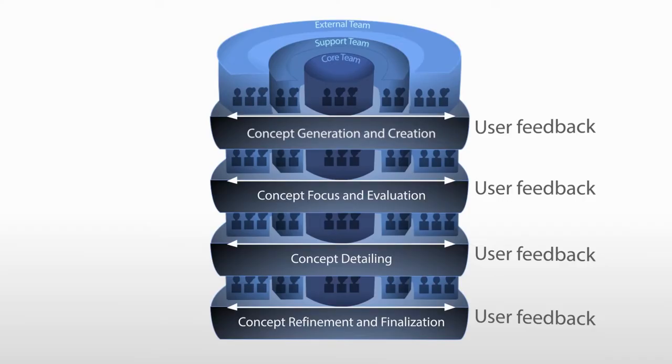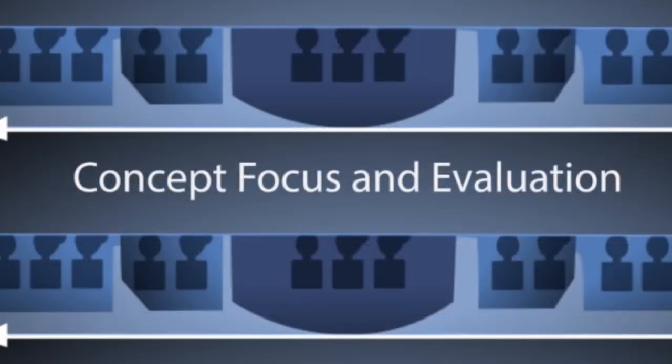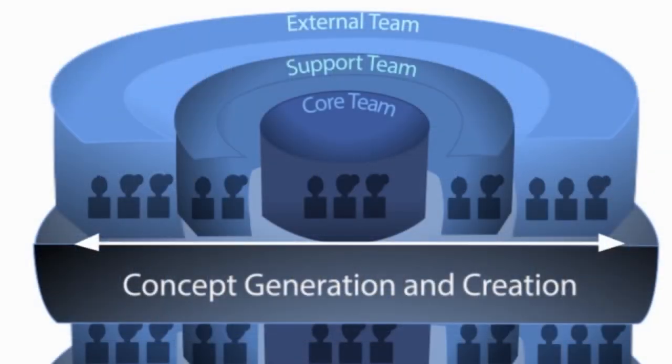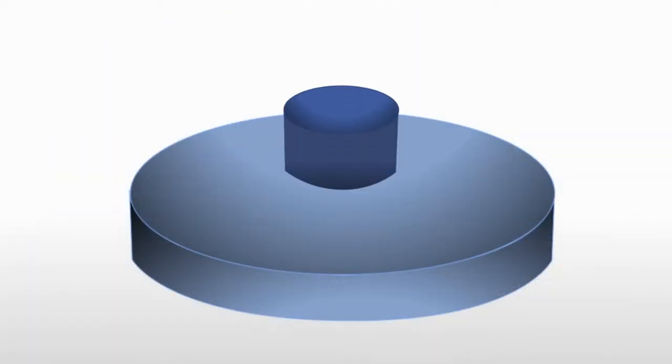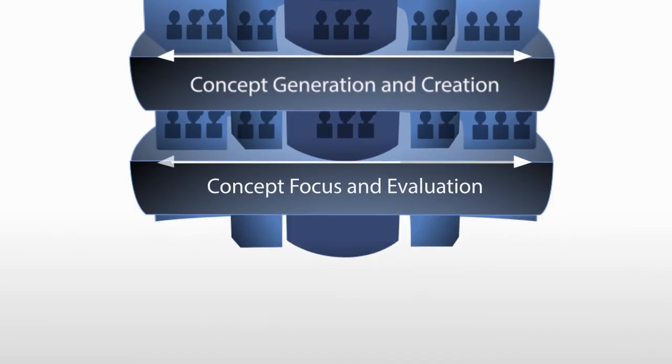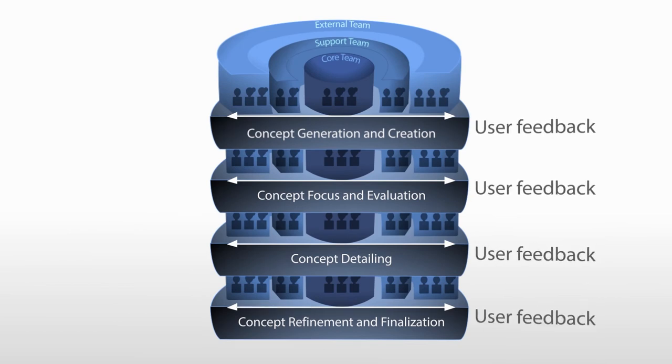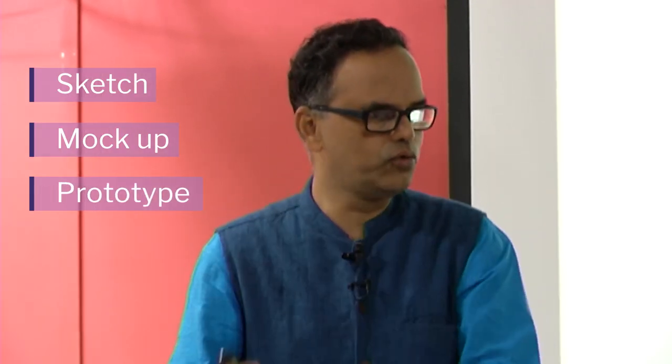A key insight from research is that you need a constant user feedback loop throughout the process of design, from day one to the connection stage. This has to happen at every junction — you make a sketch and take user reactions, you make a mock-up model and take user reactions, you make a prototype, you do pilot production, and then large-scale production. If your users are part of your feedback loop, you are sure to succeed.